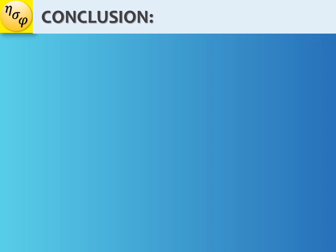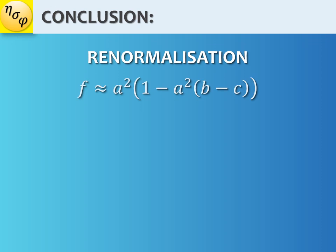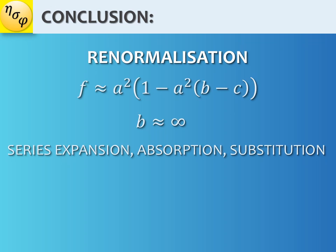In conclusion, we have learned about renormalization, which is used by physicists to get rid of infinite values in their equations. This is the original f with b is infinite. After applying these tricks, which includes series expansion, absorption, and substitution, we have gotten rid of b and found the desired new f.